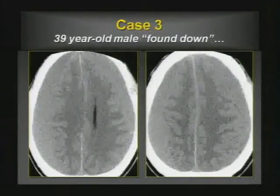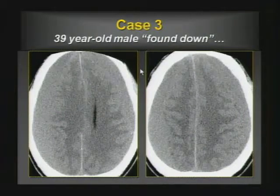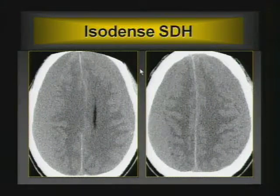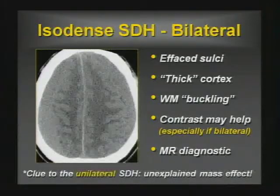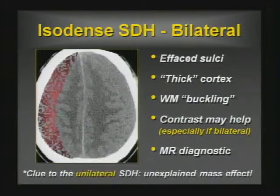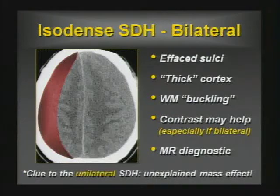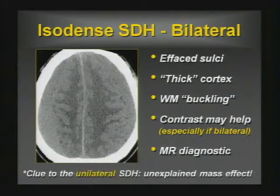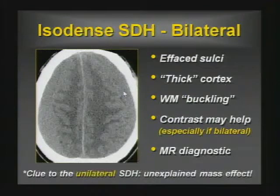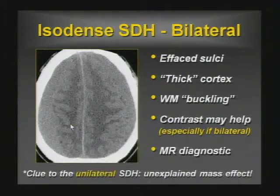Case three is a favorite — the isodense subdural hematoma. If you look at the gray-white junction, the gray-white differentiation, you can see it's displaced medially. The sulci are effaced. The so-called thick cortex — in other words, the isodense subdural mimics the density of the parenchyma, the underlying gray matter. That's called buckling of the white matter, where the subcortical U-fibers are buckled and displaced together. Sometimes contrast can help, but MR is going to facilitate this diagnosis. If the CT doesn't make the diagnosis and there's a neurological event, go on to MR.